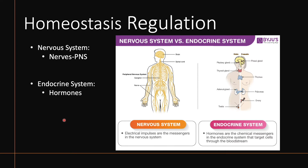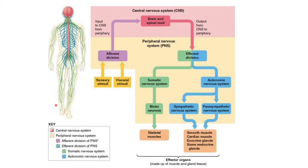Regulating homeostasis is much more complex than just stimulus → brain → response. Two major systems regulate your homeostasis: the nervous system, which deals with nerves, neurons, and electrical impulses projected throughout the peripheral nervous system, and the endocrine system, which deals with glands that release certain hormones into your bloodstream to a target area.